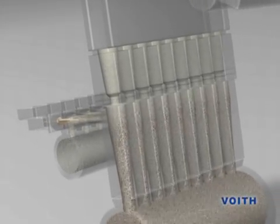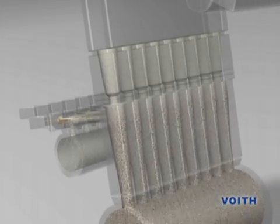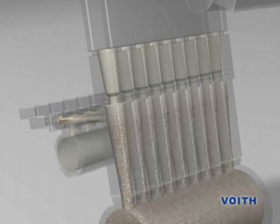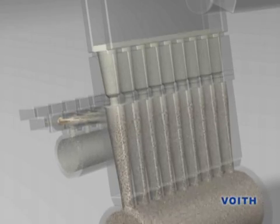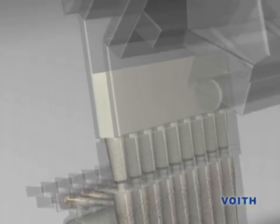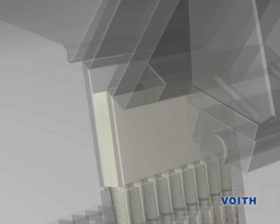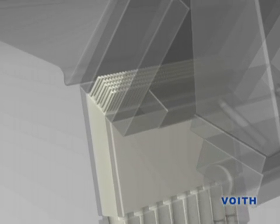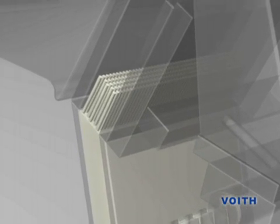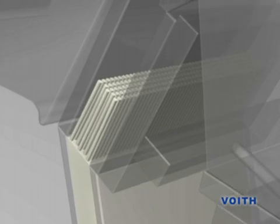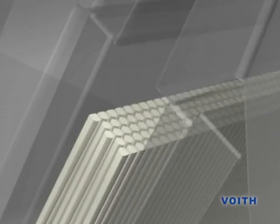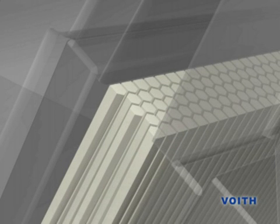After the blended stock flows have steadied in the intermediate duct, the total flow in the turbulence generator is again split into many small stock flows and a precisely defined degree of turbulence is generated. This is necessary in order to achieve a homogeneous suspension and therefore an optimal paper quality.